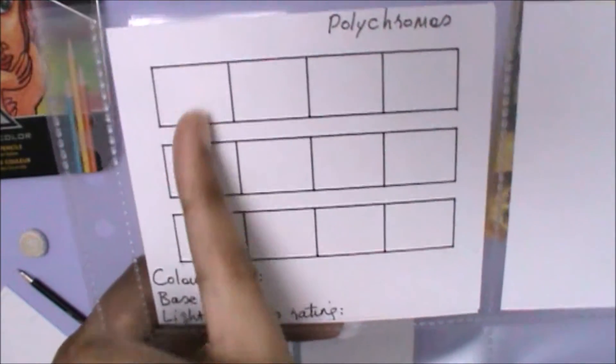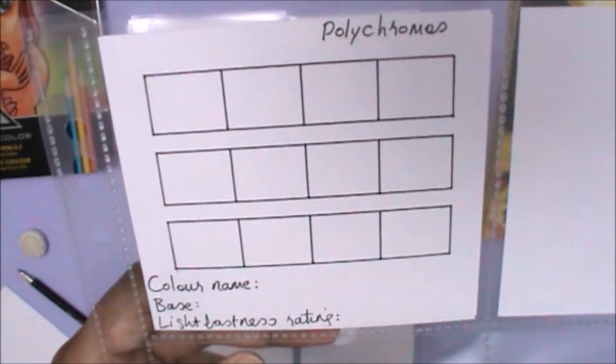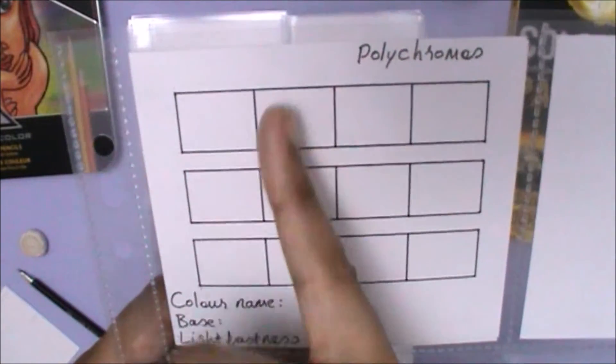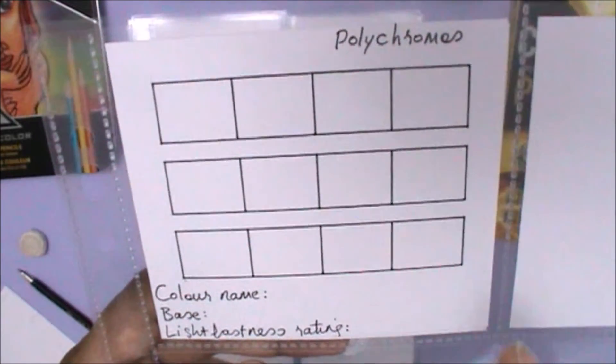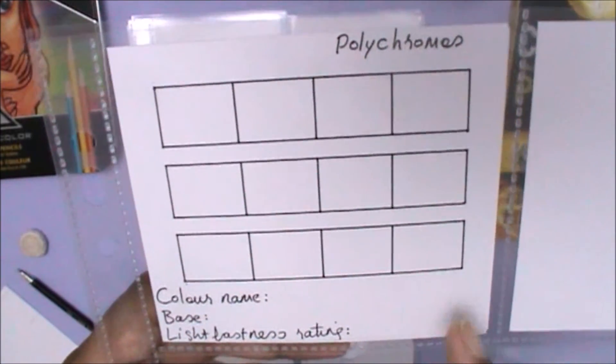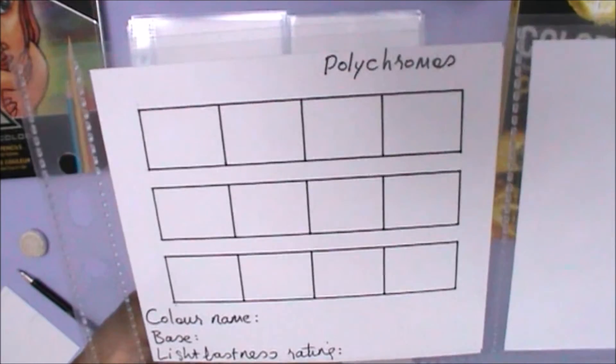As for the rest of these, in this column I will put a light pencil pressure covering, in the second column a medium pencil pressure covering, the third one is a gradient, and the fourth one is just me pressing hard on all of them to get the darkest color.